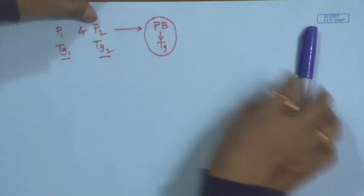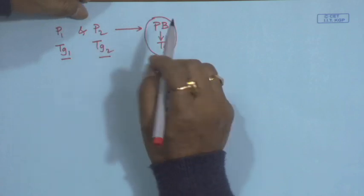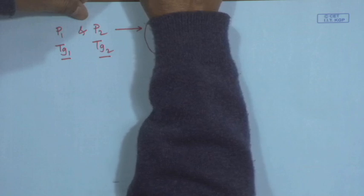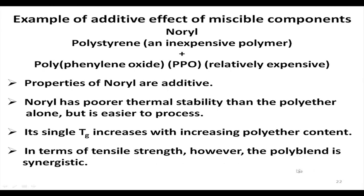The single Tg increases with increasing polyether content, since the Tg of the polyether is higher than the Tg of the other component. On increasing the polyether in the blend, the final Tg of the resultant polymer blend increases with the increase of polyether content. However, in terms of tensile strength, the polyblend is synergistic — the tensile strength gives quite improved properties at some particular composition, which is the synergistic effect explained earlier.